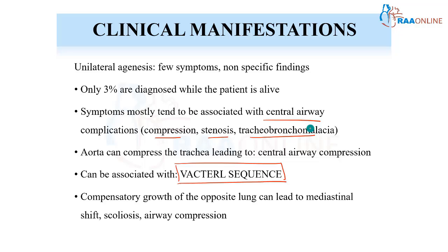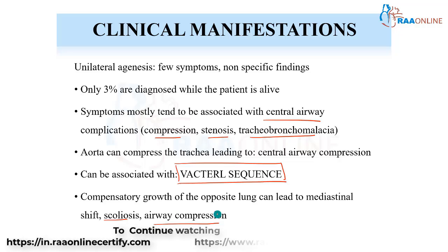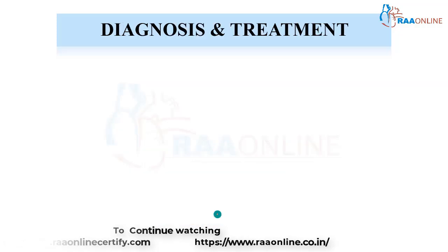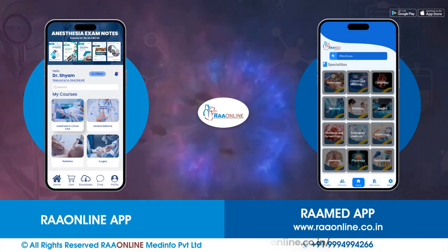The compensatory growth of the normal lung pushes the mediastinum to the opposite side, which can cause scoliosis and airway compression. So in pulmonary agenesis or pulmonary hypoplasia, the manifestation is either due to an association with VACTERL sequence or due to mediastinal and airway compression, or compensatory growth of the normal lung.